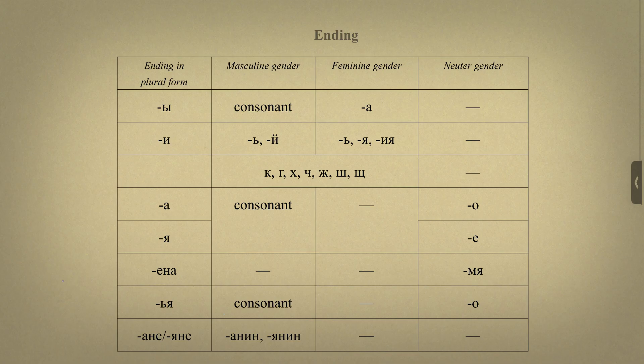Endings А and Я have some nouns of masculine gender and nouns of neuter gender with endings О and Е. Endings мягкий знак Я have some nouns of masculine gender and nouns of neuter gender with an ending О. Endings АНИН, ЯНИН change to АНЕ, ЯНЕ.